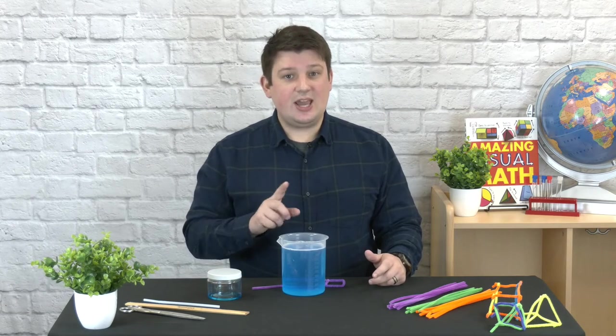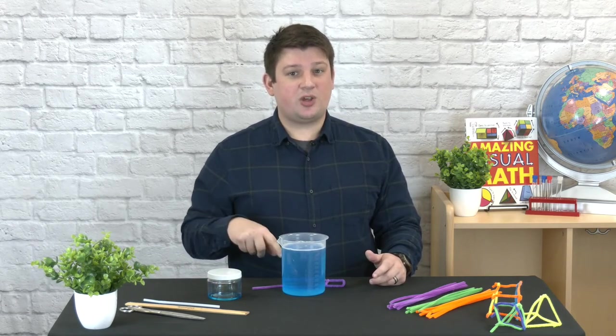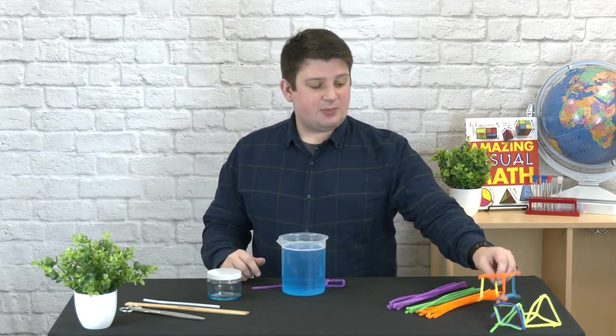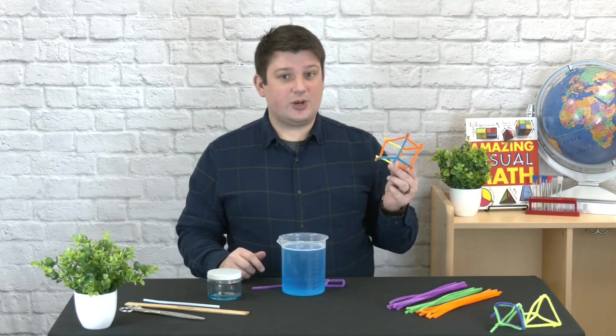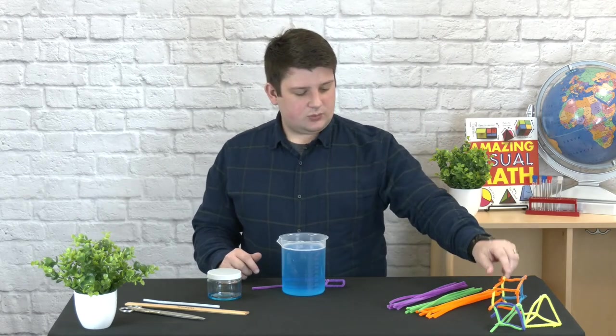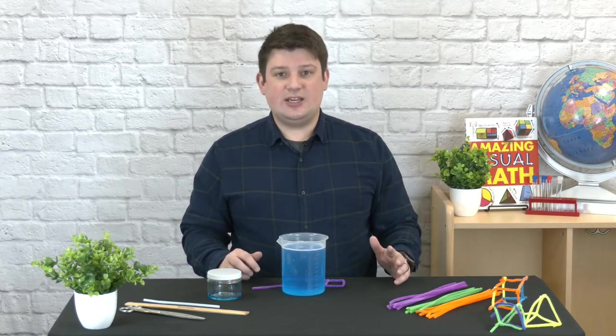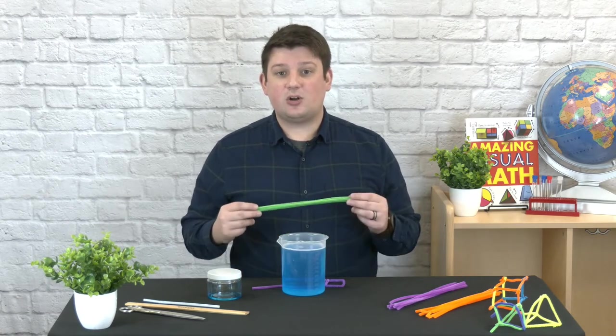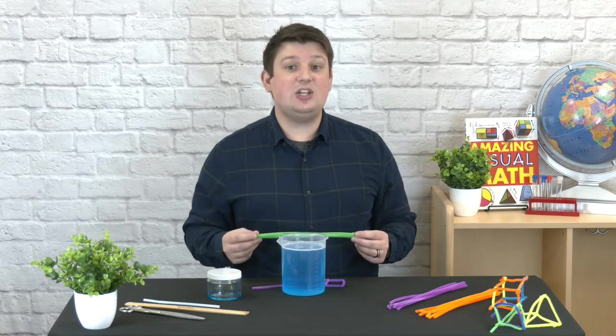But today, we're going to try to see if we can trick the bubbles into becoming different shapes. And the way we have to do that is by making different sorts of 3D objects. So first, let's start off easy and make what's called a triangular pyramid, also known as a tetrahedron.